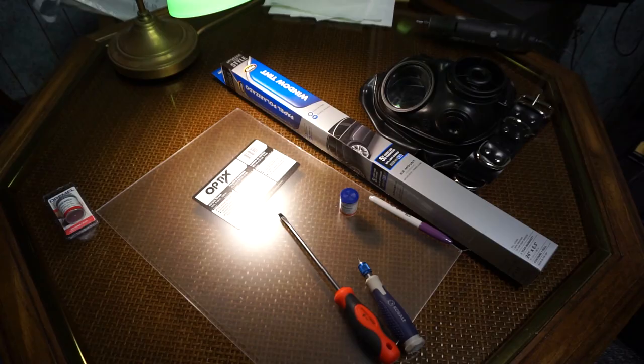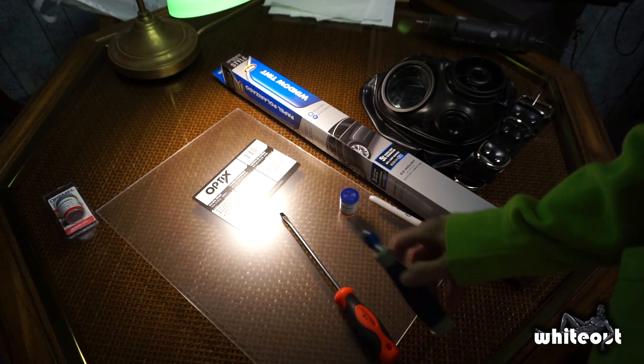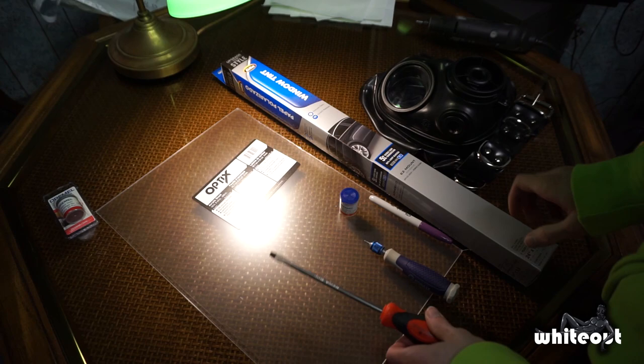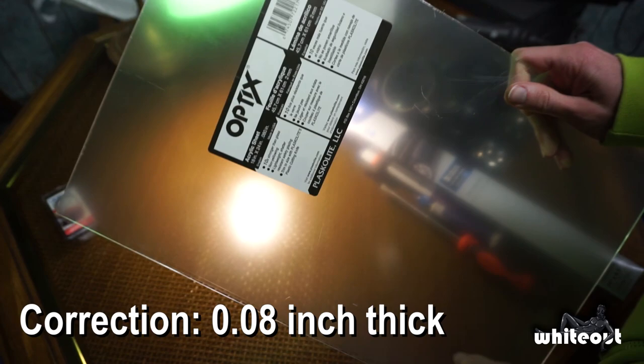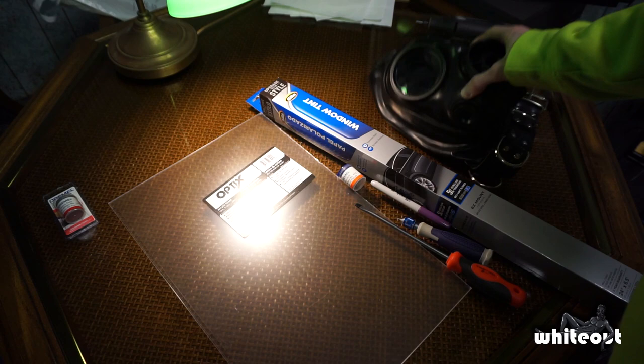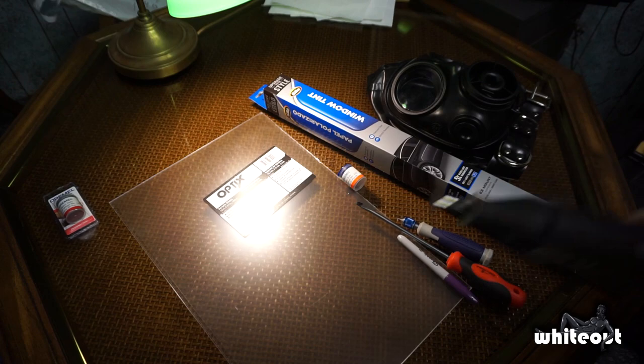So here's everything we'll need to get started. You're going to need a small screwdriver with a jeweler's tip on it, a larger flat tip one, some car window tinting at 5%, a sheet of plexiglass or acrylic that's 0.8 inches thick, obviously your S10 gas mask, and then also to cut this we're going to be using a Dremel with the cutting tool on it. So let's get to work.